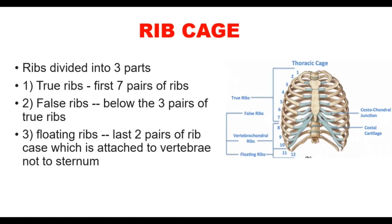The rib cage is divided into three parts: true ribs, false ribs, and floating ribs. Ribs 1 to 7 are true ribs, 8 to 10 are false ribs, and the 11th and 12th pairs are floating ribs. Floating ribs are not attached to the sternum — they are attached only to the vertebral column. True ribs and false ribs are attached to the sternum.